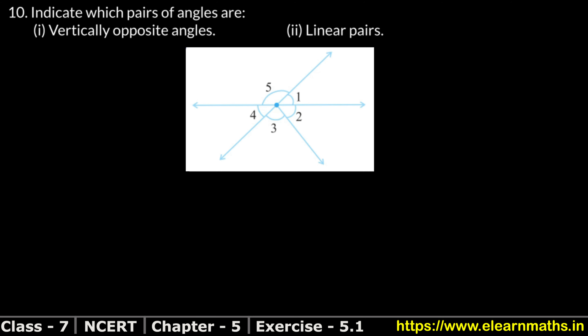Now what are linear pairs? Look at this. These are linear pair angles because these are adjacent angles. For adjacent angles there is a common arm. The non-common side is opposite. The common side is this one. It's adjacent angles, and the non-common sides are in opposite directions — this direction and this direction.